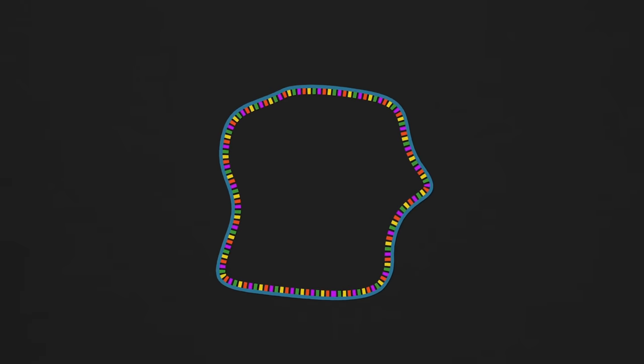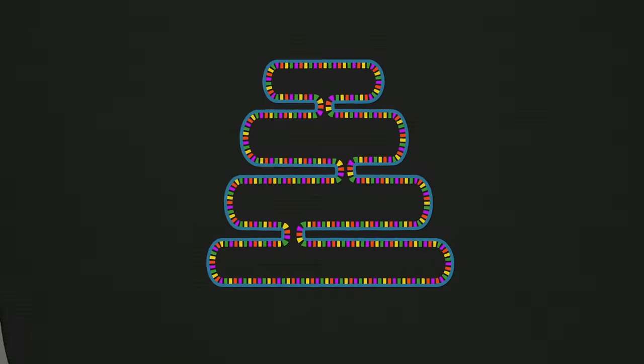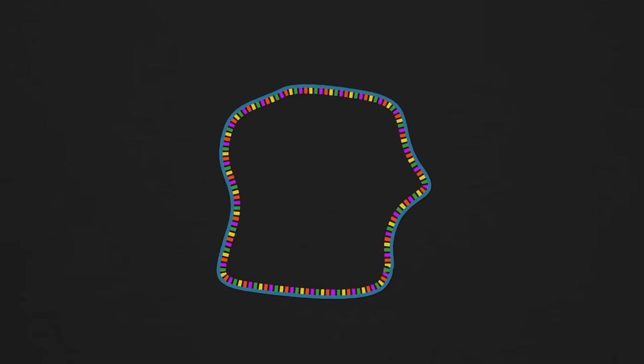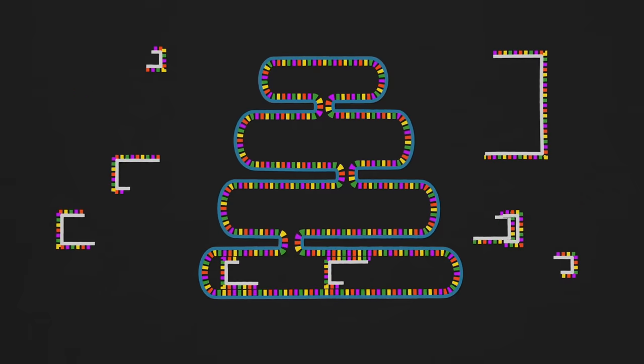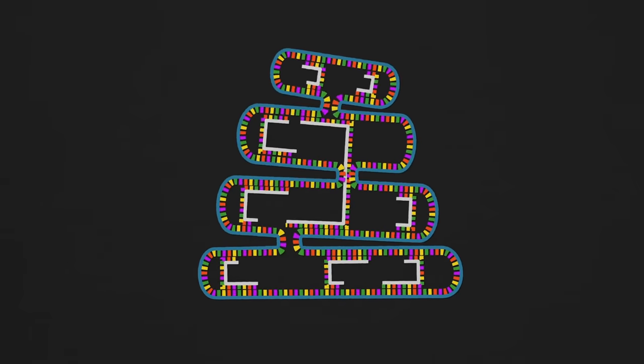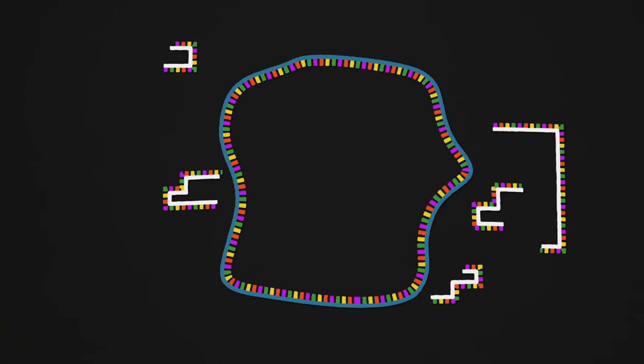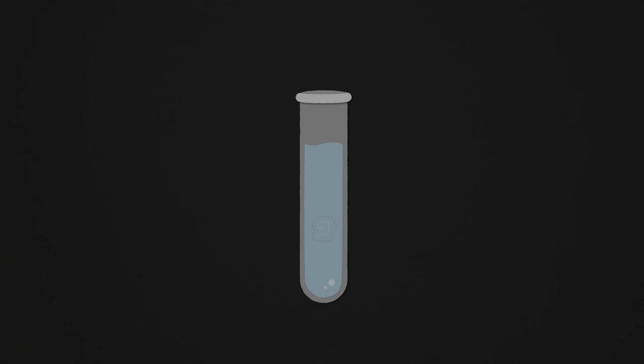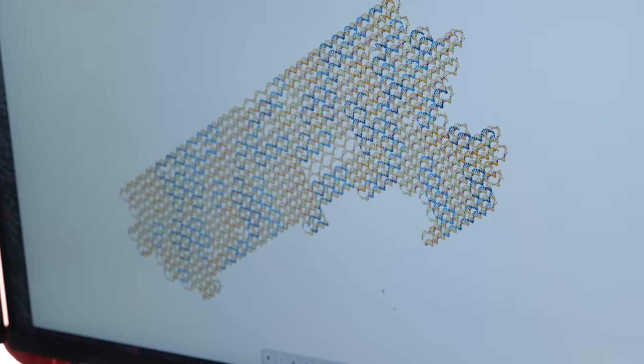So using that principle, they start with a naturally occurring single-stranded DNA they call the scaffold strand, and on a computer, they design out the shape they want. Now as it stands here, there's nothing attached to the other side, so it would just lose its shape. But if you add in a bunch of what they call staple strands of DNA that are specifically designed to match the corresponding sections on the scaffold strand, they effectively lock it into the desired shape. So in theory, if you just put a random scaffold strand and then all the corresponding custom-made staple strands in a solution together at the right temperature, and then let it sit for a while, it would automatically self-assemble into an infinitesimally small Nerf gun made strictly from DNA. No way.